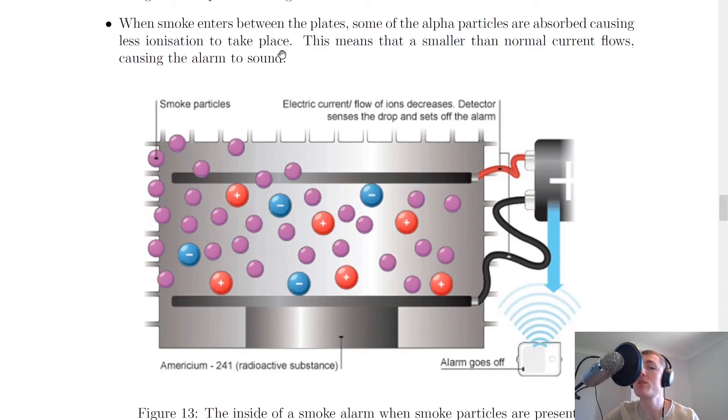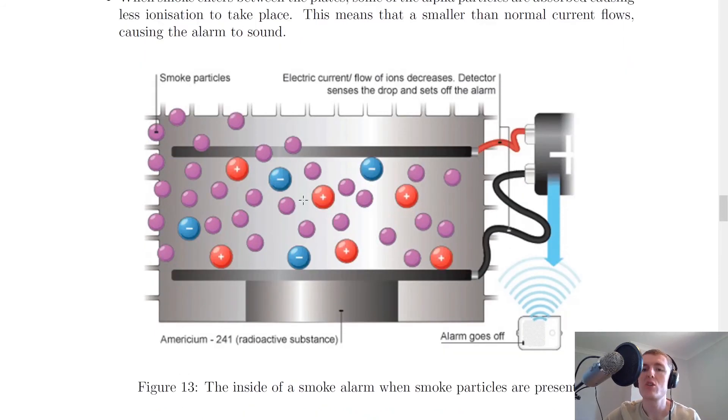But here's the important part. When smoke enters between the plates, some of the alpha particles are absorbed, causing less ionization to take place. This means that a smaller than normal current flow is causing the alarm to sound. It's this decrease in current flow that is detected that is triggering an alarm to sound.